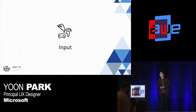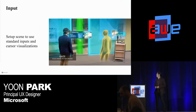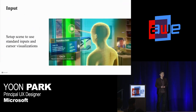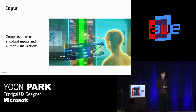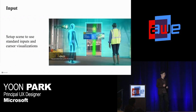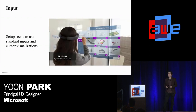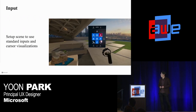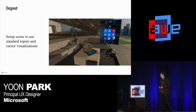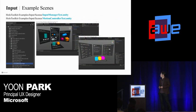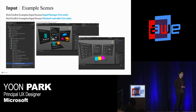Let's get started with input. Whether you are designing apps for HoloLens or an immersive headset, you need to set up proper input to get the gaze cursor, gesture input, and motion controller working in your app experience. MRTK makes it very easy. These are two great example scenes you can start with. Under the examples, input, and scenes folder, you can find the Input Manager Test and the Motion Controller Test scenes.